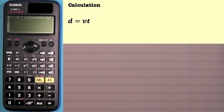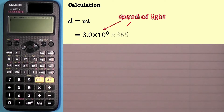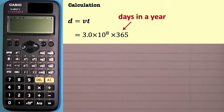To find that distance, we start off substituting for the speed of light, which is 3 times 10 to the power of 8 meters per second — you'll find that in the data sheet at the front of the exam. Next we need to find how many seconds in a year, starting with 365, the number of days in one year.